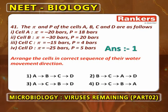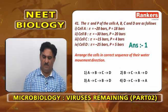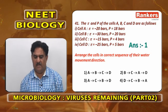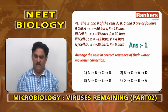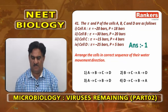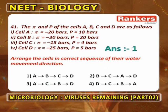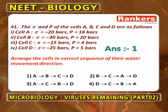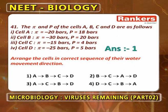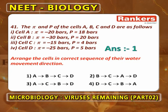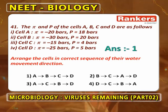Water potential = pi + P: Cell A = −20 + 18 = −2 bars. Cell B = −30 + 20 = −10 bars. Cell C = −15 + 4 = −11 bars. Cell D = −25 + 5 = −20 bars. So A is maximum water potential, then B, then C, then D. Water moves from higher to lower water potential, so the sequence is A to B to C to D. This is according to water potential gradients.